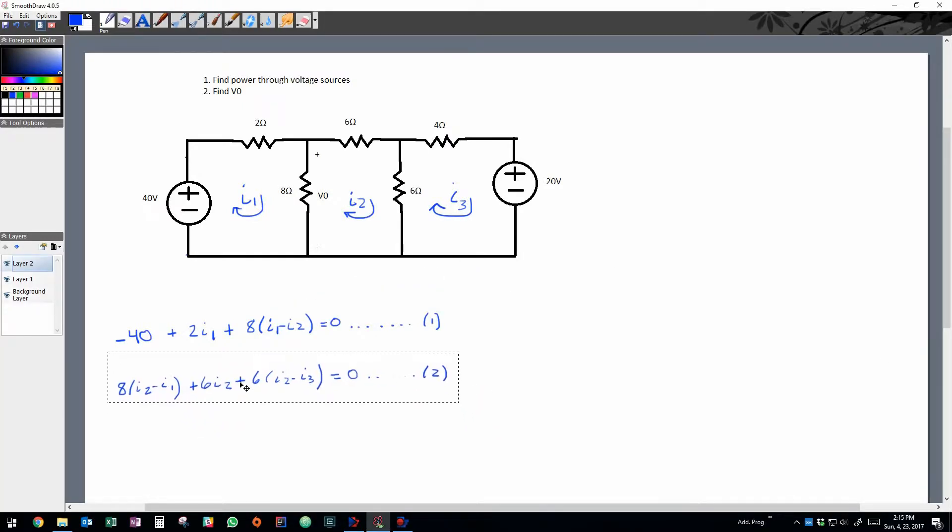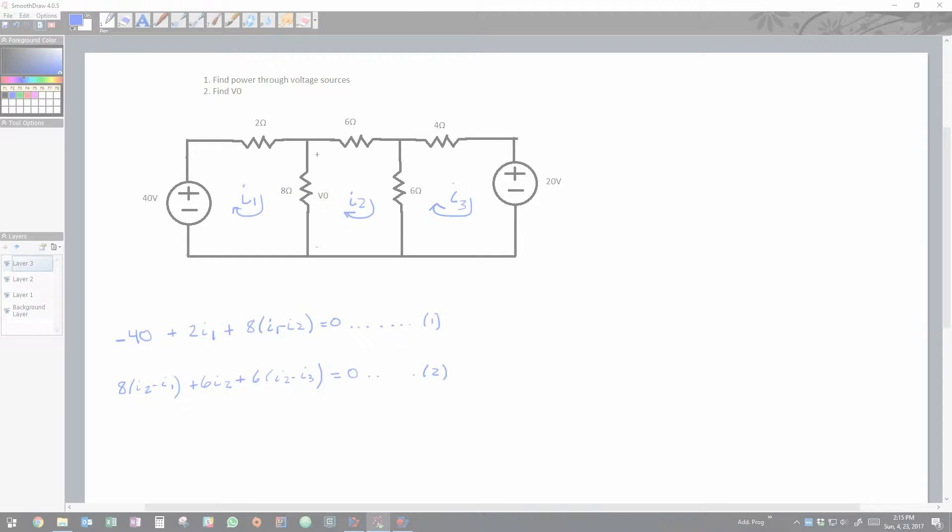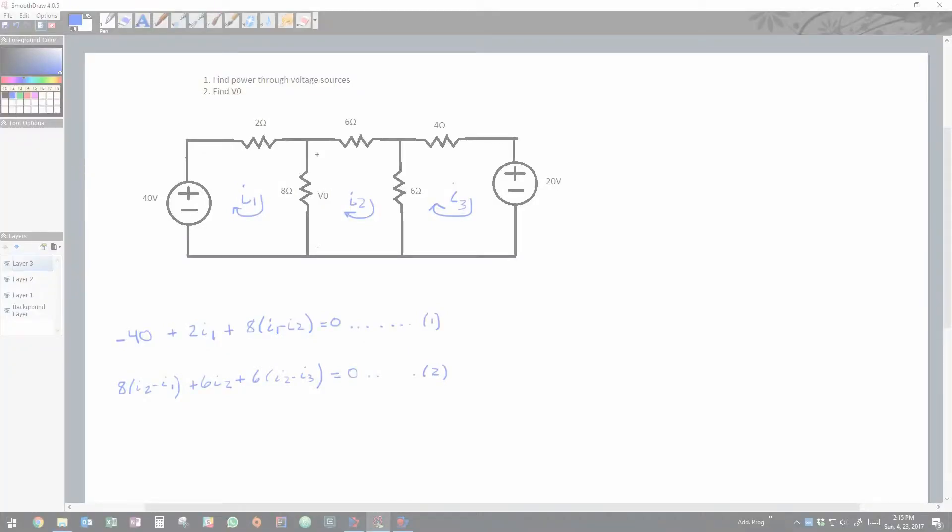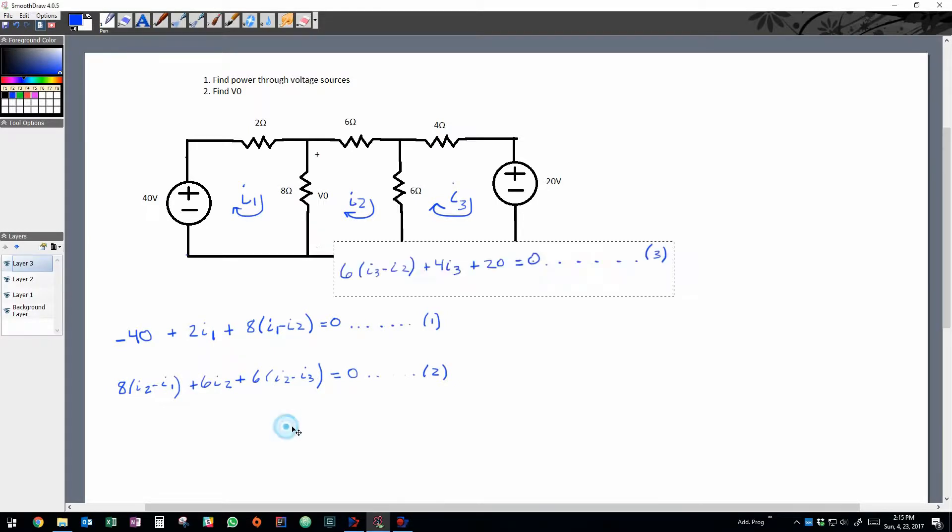And then for the resistor in the middle, we're actually going to have i1 subtracted by the current of i2, multiplied by the resistance. So we can follow suit with all of the three loops doing the same exact method.